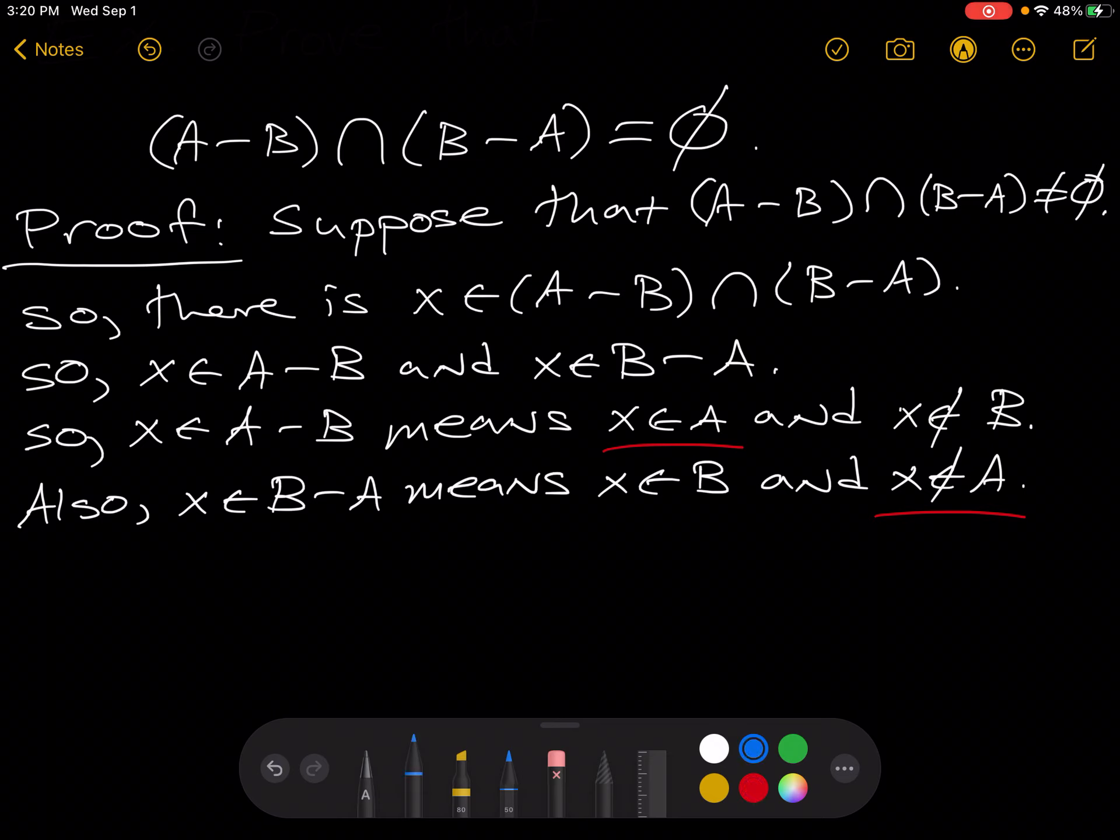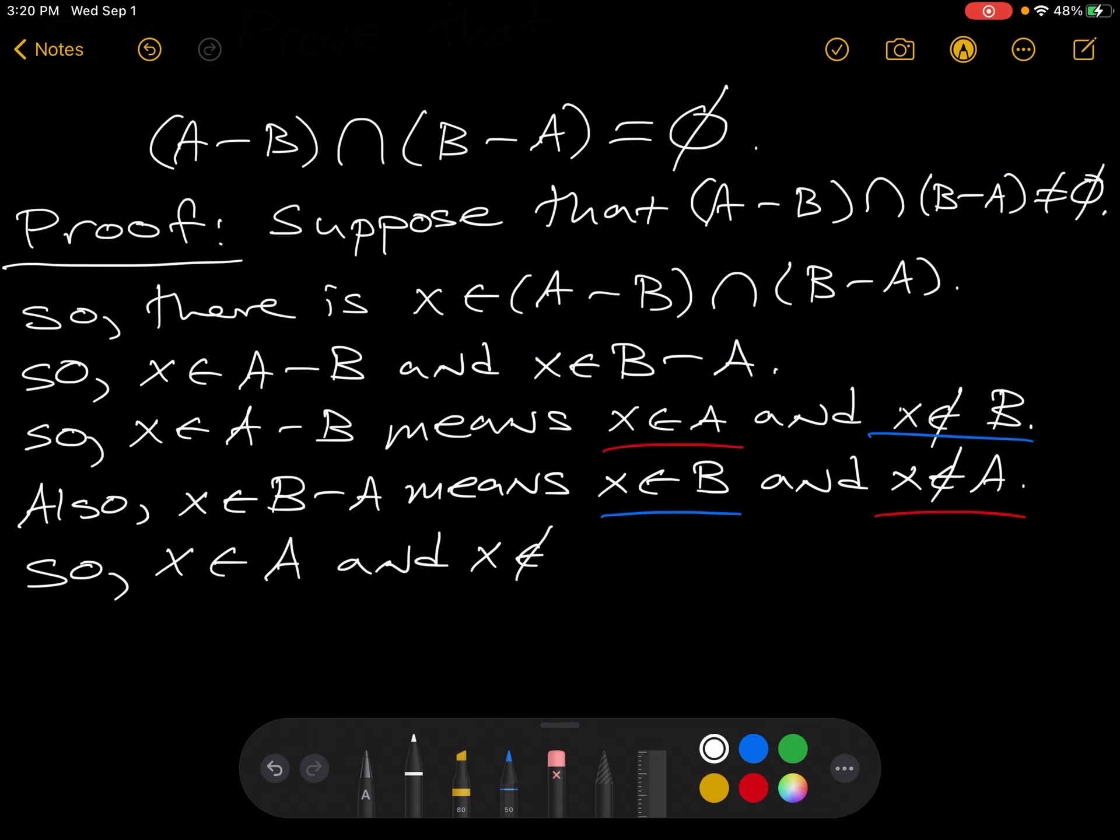Also, there's really two contradictions going on here. We also have that x is in B and x is not in B. But all we really need is just one contradiction. So I'm just going to use the one about A. So x is in A and x is not in A, which cannot happen.